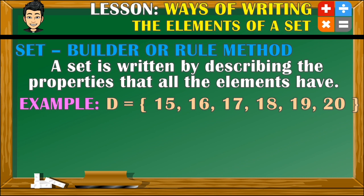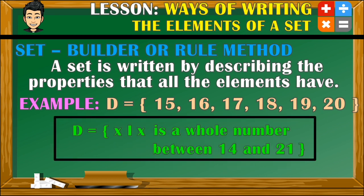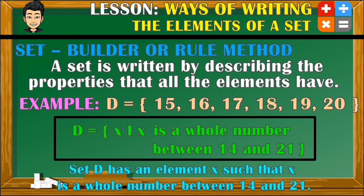Looking again at example number 2: aside from describing the elements as whole numbers from 15 to 20, we can also describe them as whole numbers between 14 and 21. And so we can have another answer. Reading this: set D has an element x such that x is a whole number between 14 and 21. You see, we can have several answers in rule or set builder method, provided that the different descriptions you give are all pertaining to the given elements.